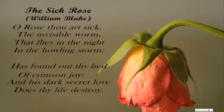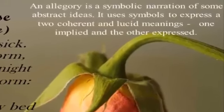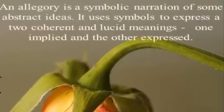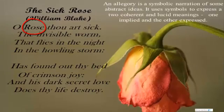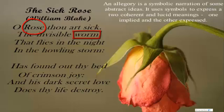The poem can also be taken as an allegory. An allegory is a symbolic narration of abstract ideas using symbols to express two coherent meanings — one implied and the other expressed. Here the rose stands as a symbolic representation of all things pure, innocent, and virtuous. On the other hand, the worm with its dark secret love symbolizes opposite and evil forces that destroy purity, innocence, and virtue.